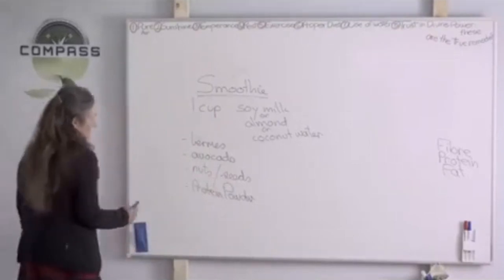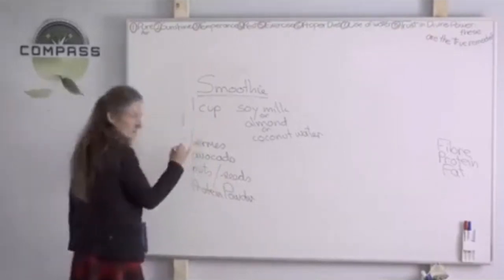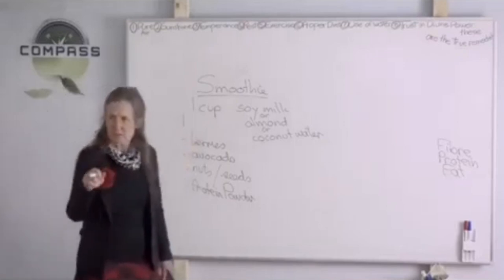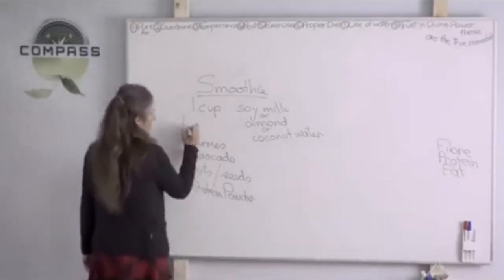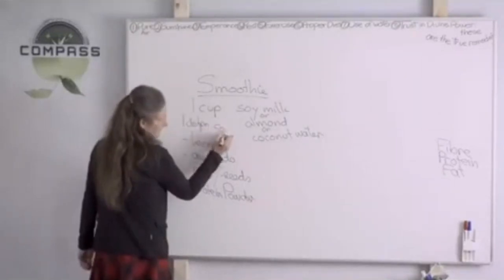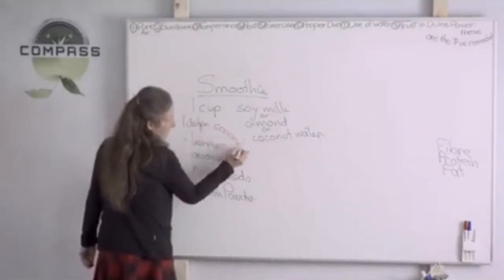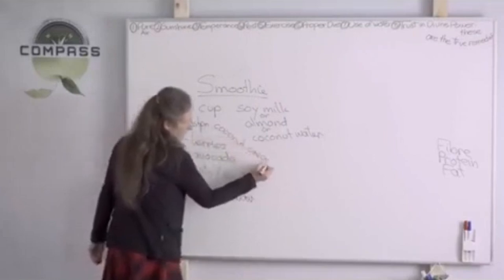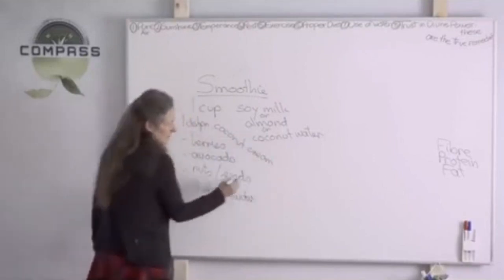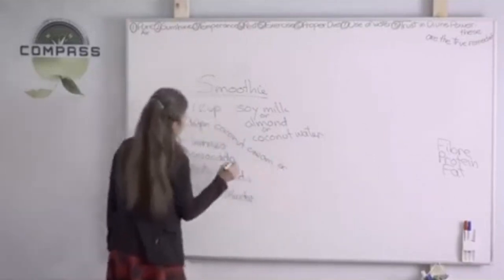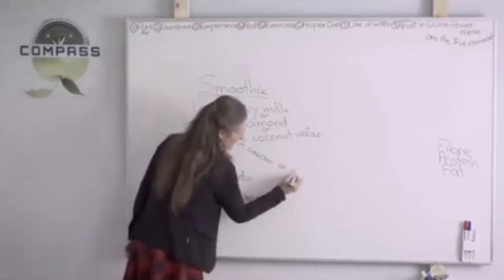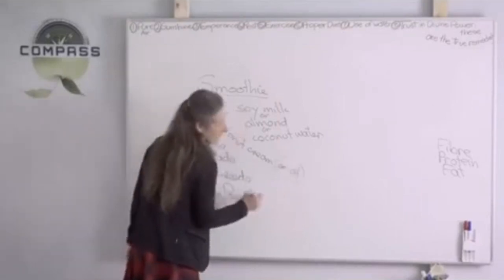What some people will do is they might put maybe one dessert spoon—that's what you eat your dessert with—of coconut cream. That makes it really nice and creamy. Or some people will just put a dessert spoon of coconut oil in, and they find that's a really nice way to get the coconut oil in because it's masked by everything else.